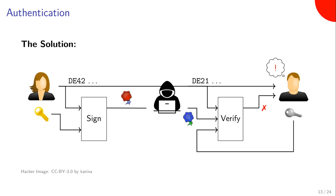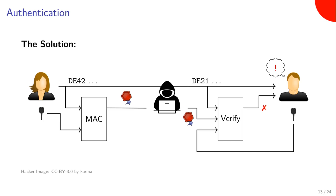The only way Bob will accept the signature is if the bank account number has not in fact been changed, and in this case it is safe for Bob to transfer the money. There is a different solution to this problem: just a single key used for both authentication and verification. In this case things work the same way except that the signature is called a message authentication code, or MAC for short.